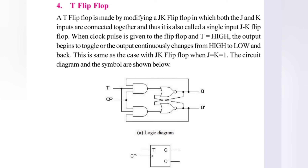When a clock pulse is given to the T flip-flop and T equals high, the output begins to toggle — that is, the output continuously changes from high to low and back. This is the same as the case with the JK flip-flop when J equals K equals 1.